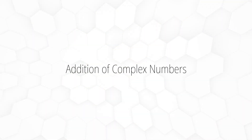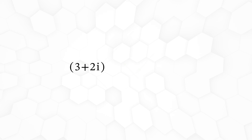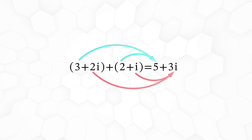Let's begin by looking at the algebra of addition. Addition and subtraction work exactly as you would expect with normal algebra, treating i as a simple constant. Let's take for example 3 plus 2i plus 2 plus i. Firstly we add the real parts: 3 plus 2 is 5. Then we add the imaginary parts: 2i plus i is 3i.